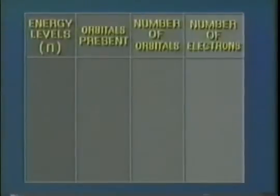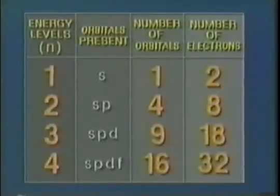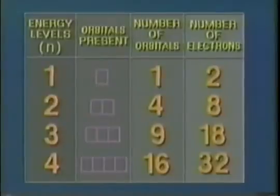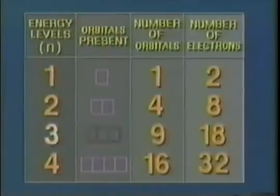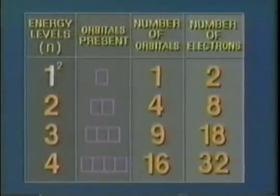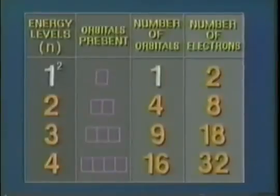All this information when summarized shows a definite pattern. The number of orbital types in each level is the same as the number of the level. If we square the energy level, the resulting number is equal to the number of orbitals at that energy level.